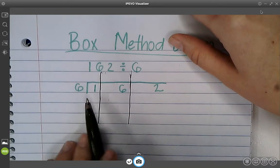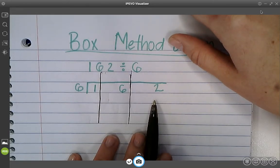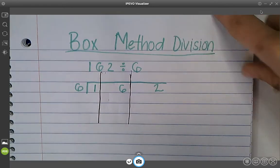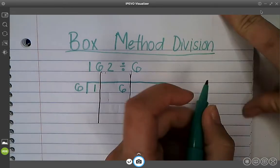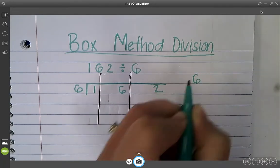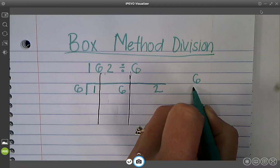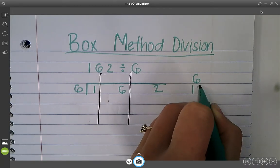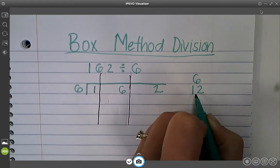So we have our hundreds, tens, and ones. Okay, so we are going to list our multiples of 6. Maybe you have your multiplication chart, you're using touch math, whatever you need, but let's list the first 5. Okay, that's a good starting point.